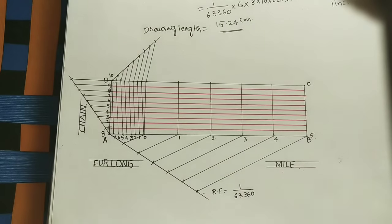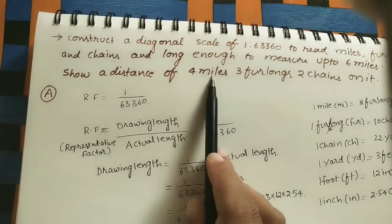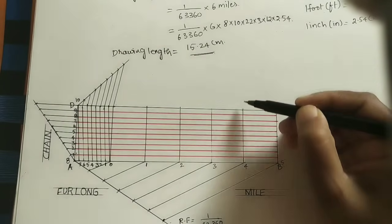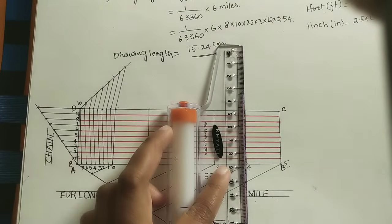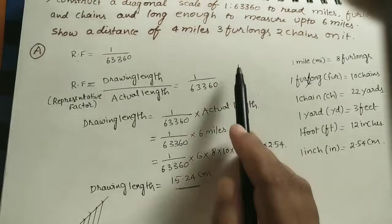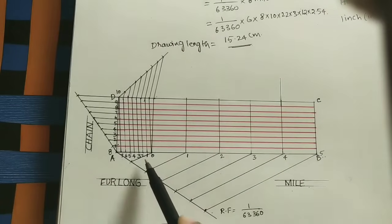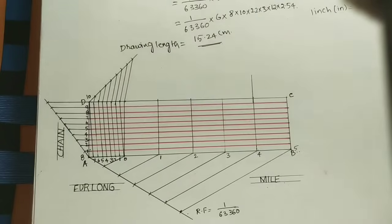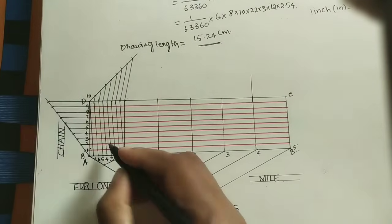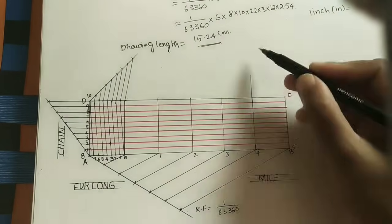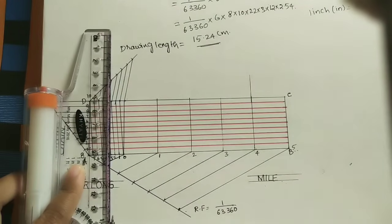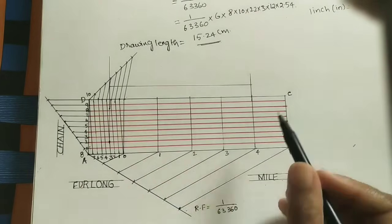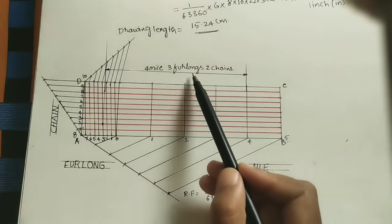Now mark the distance of 4 miles 3 furlongs 2 chains on the scale. For 4 miles, go from zero to 4 — that is the four miles. Then for 3 furlongs, take the third furlong line. For 2 chains, take the second chain line. Take the intersection point of 3 furlongs and 2 chains, and at that point draw a vertical extension line. Mark the dimension between the reference lines — this shows 4 miles 3 furlongs 2 chains.